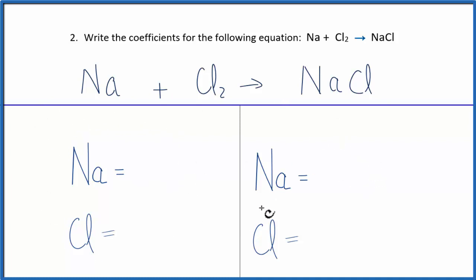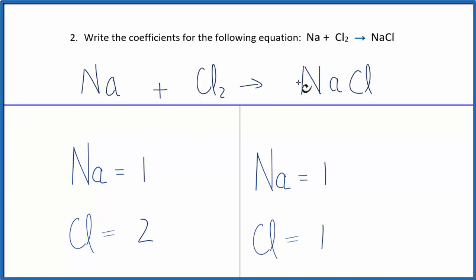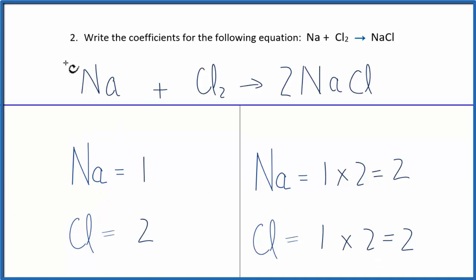To balance an equation, it's sometimes easy to write out a chart so you can compare atoms on each side — reactants and products. You can only change the numbers in front, not the subscripts. The numbers in front are called coefficients. If I put a two in front of NaCl, that two applies to everything: 1 Na × 2 gives two Na's, and 1 Cl × 2 gives two chlorines. Then I fix the sodiums by putting a two in front of the sodium atom, giving me two. The coefficients are 2, 1, 2.